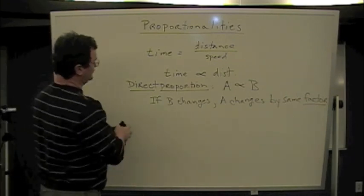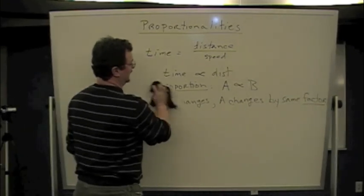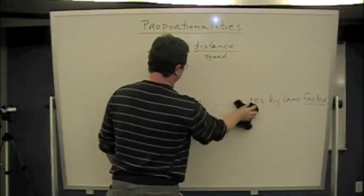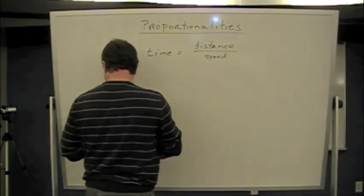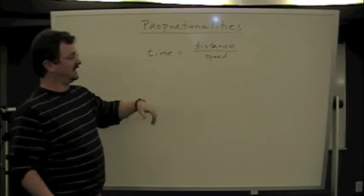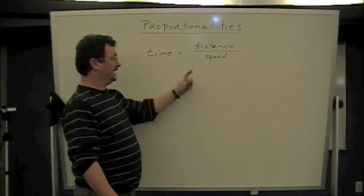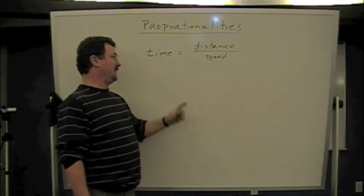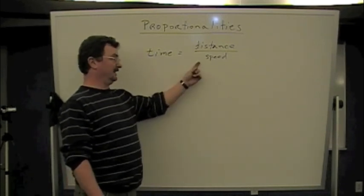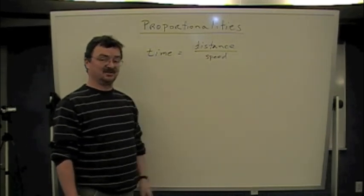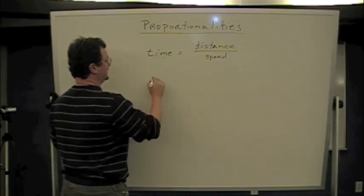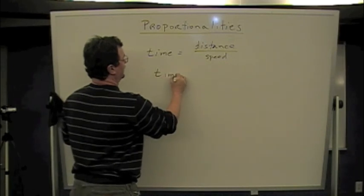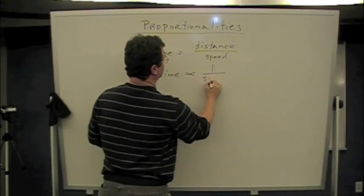How about though, if instead of the speed remaining the same, the distance remains the same? Let's say you're going to have a road race, or let's say you run cross-country. You have to run the same distance. How are you going to reduce your time? Well, you reduce your time by increasing your speed, right? So if the distance is the same, then you say that time is inversely proportional to speed.